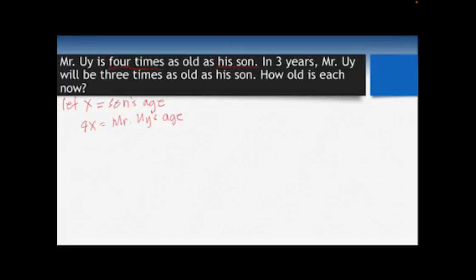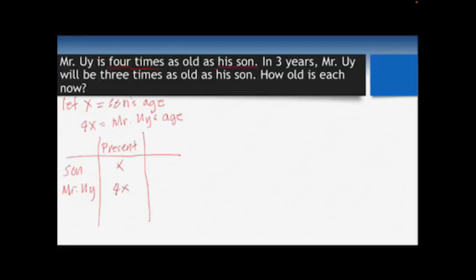Another technique I use in solving problems like this is to create a table and place the given information in it. So let's have the son and Mr. Ui, and identify their present age. The present age of the son is x and Mr. Ui's age is 4x. In three years, we add three more years to both, giving x + 3 for the son and 4x + 3 for Mr. Ui.